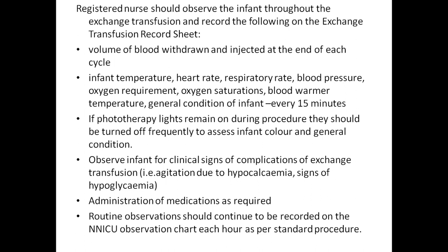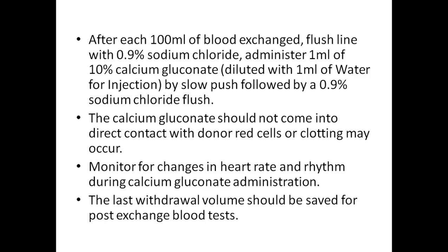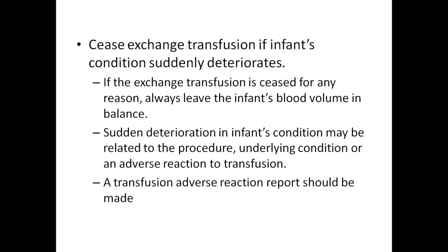Observe the infant for clinical signs of complications. Routine observations should be recorded on the NIC observation chart each hour. After each 100 ml of blood exchanged, flush the line with 0.5 ml of normal saline and administer 1 ml of 10% calcium gluconate diluted in 1 ml of water for injection by slow push, followed by a 0.5 ml normal saline flush. Calcium gluconate should not come into direct contact with donor cells as clotting may occur. Monitor changes in heart rate and rhythm during calcium gluconate administration. The last withdrawal volume should be saved for post-exchange blood tests. Cease the exchange transfusion if the infant's condition suddenly deteriorates, always leaving the infant's blood volume in balance. Sudden deterioration may relate to the procedure, underlying condition, or an adverse transfusion reaction, which should be reported.